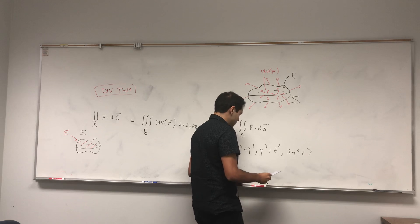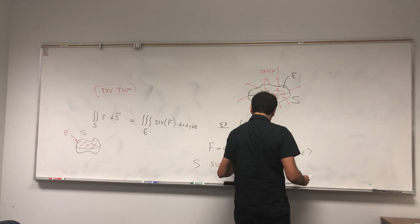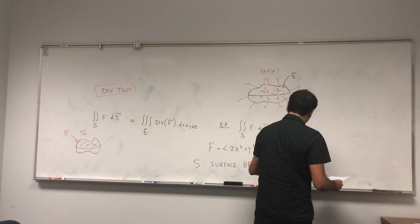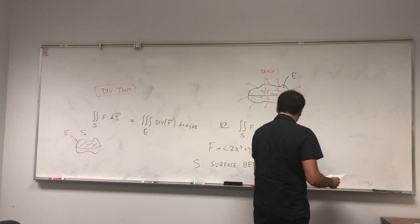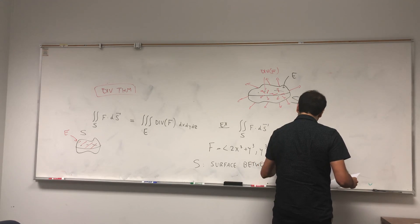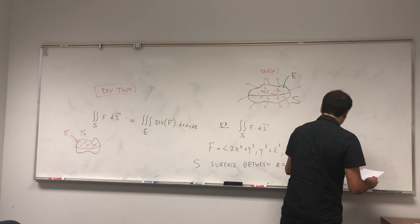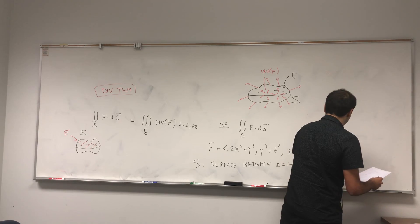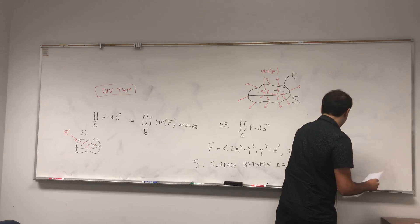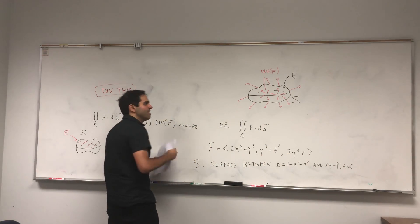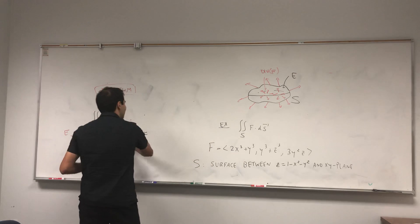And s is even more complicated - it's the surface between the paraboloid z = 1 - x² - y² and the xy plane.